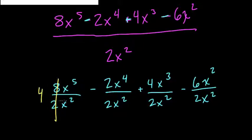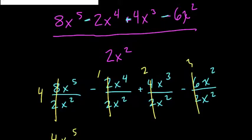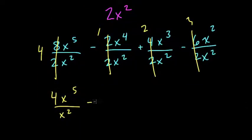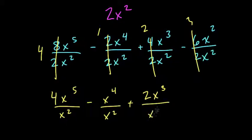8 over 2 is 4, 2 over 2 is 1, 4 over 2 is 2, and 6 over 2 is 3. So now we have 4x to the 5th over x squared minus 1x to the 4th or x to the 4th over x squared plus 2x to the 3rd over x squared minus 3x squared over x squared.